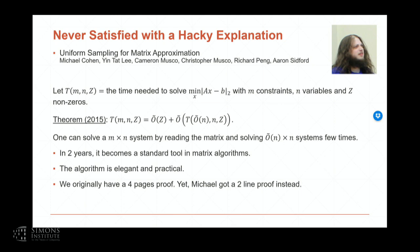Within a few years, this has been a standard tool for solving many algorithms because this algorithm is very simple. It just involves sampling the matrix, figuring out which constraint is important, and doing something again. The funny thing about this research is originally we had a kind of hacky proof, but he would never settle with a simple proof. For this one, he got a two-sentence proof for this result. Before, our results were in an even more complicated paper, like 50 pages or something. In the end, he just got two sentences.